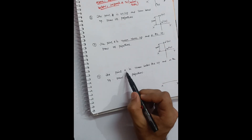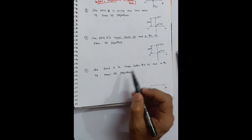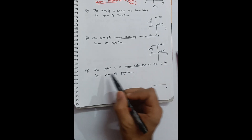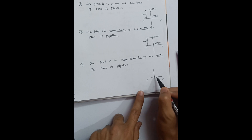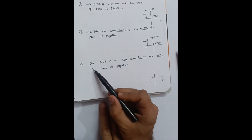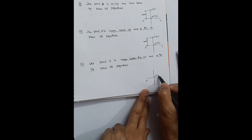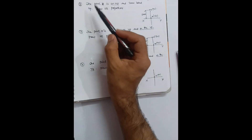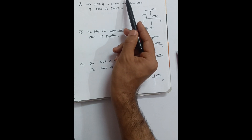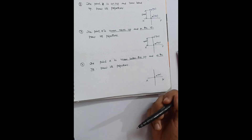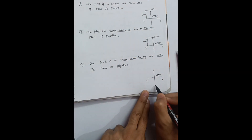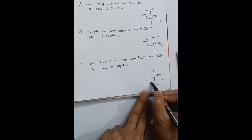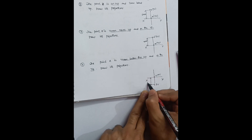Next problem: point A is 40 mm below HP and on VP — draw its projections. Since the point is on VP, it is your top view — draw it on the reference line. For the front view: the relationship is with HP (40 mm below HP). Since it is 'below', the front view goes on the below side of the reference line. Draw the front view 40 mm below the reference line.